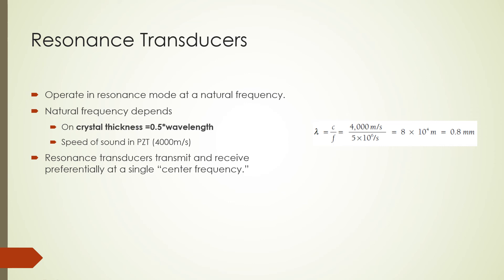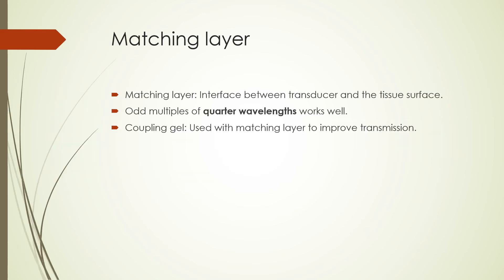A matching layer between the ultrasound transducer and the tissue surface increases sound transmission into soft tissues by minimizing acoustic impedance differences between the transducer and the patient surface. A matching layer with a quarter-wavelength thickness, or odd multiples of the quarter wavelength, provides good transmission through the skin layer. A coupling gel is also used with the matching layer to improve transmission by removing air bubbles that would cause signal loss.